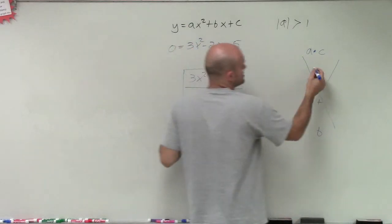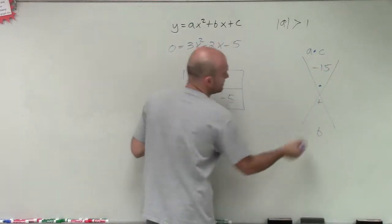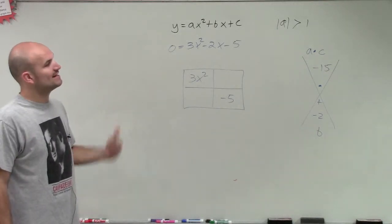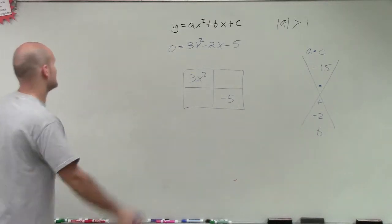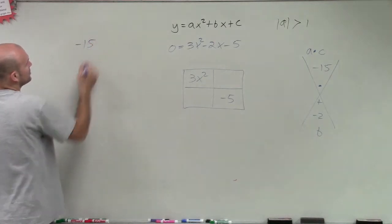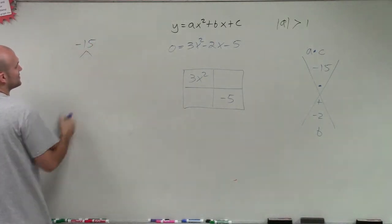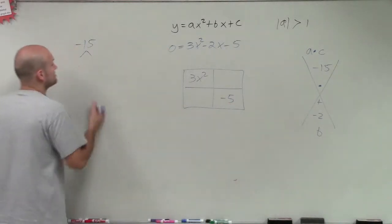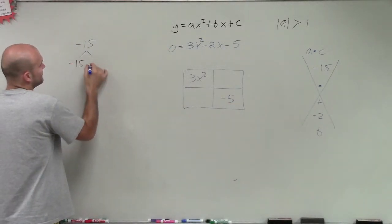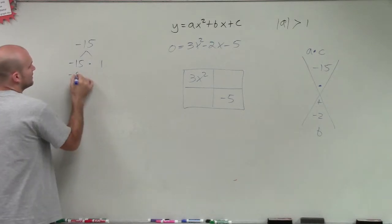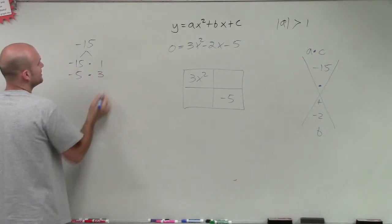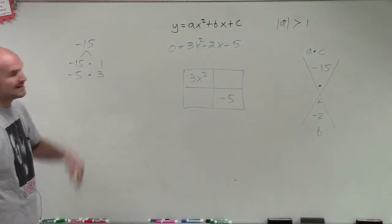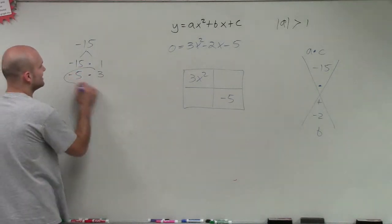So I did a times c, which is negative 15, and our b, which is negative 2. Now I need to find two values that multiply to give me negative 15 but add to give me negative 2. Since I'm multiplying to get negative 15, one of my factors has to be negative. And since they add to give me a negative number, the larger number has to be negative. So the options are negative 15 times 1, or negative 5 times 3. Out of these two, negative 5 and positive 3 give us negative 2.